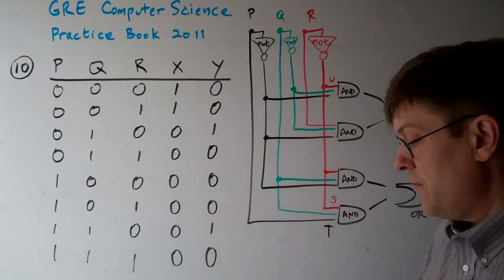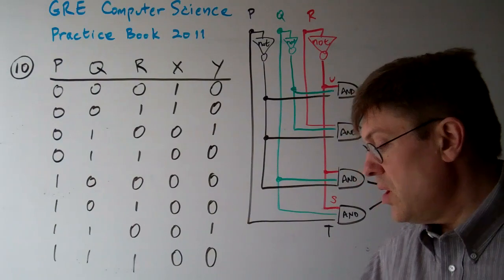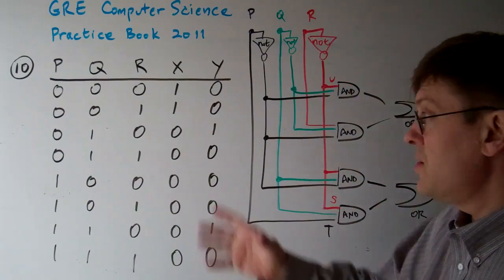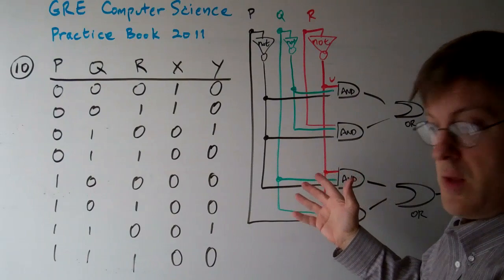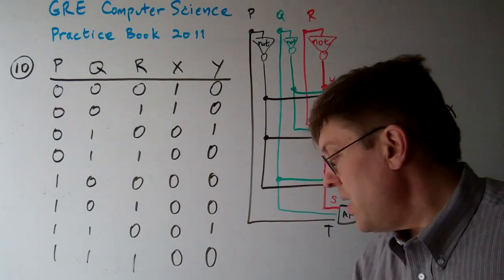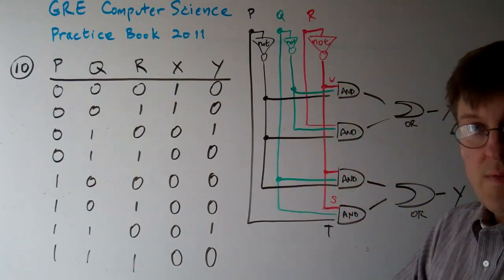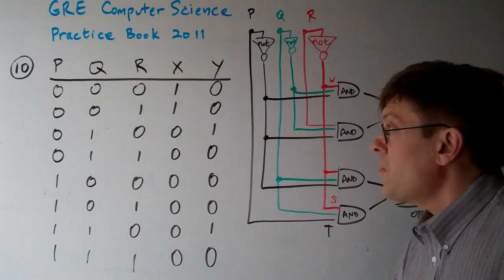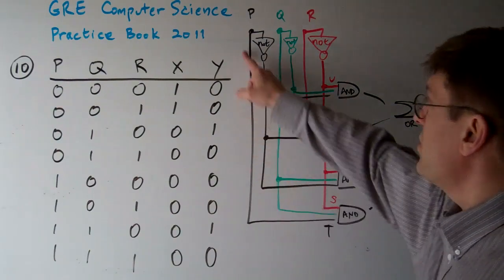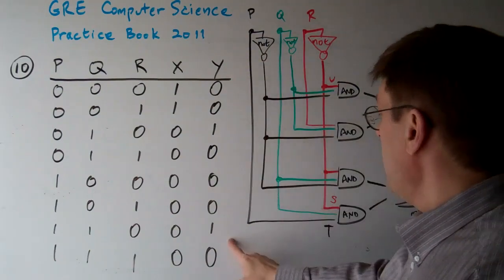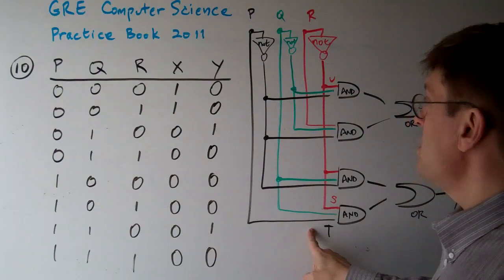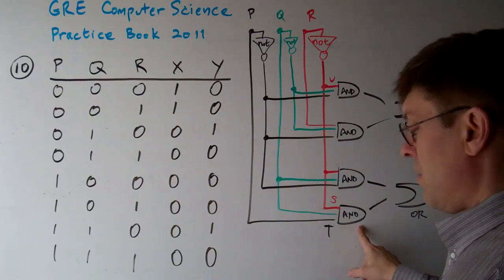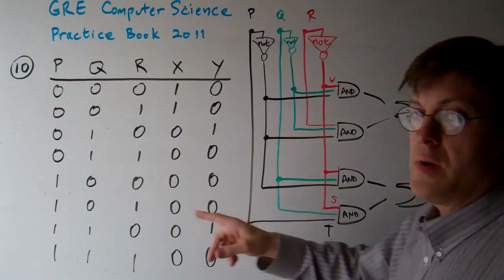The only way to quickly check this out is to just verify the truth table and the diagram and see if there are any errors. We can just go through it one at a time.